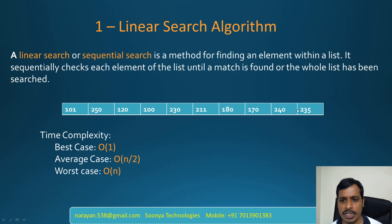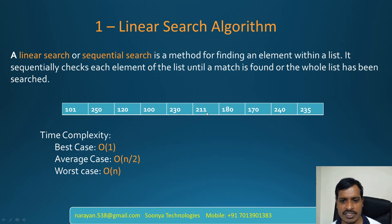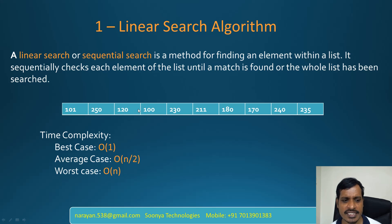For example, we need to search for student ID 235. First we check 235 equals 101 — no. Then 235 equals 250 — no. Then 235 equals 120 — no, and so on. It will check up to the last item. Here we find that 235 equals 235, and it takes 10 iterations to find the item. So the worst case is O(10).